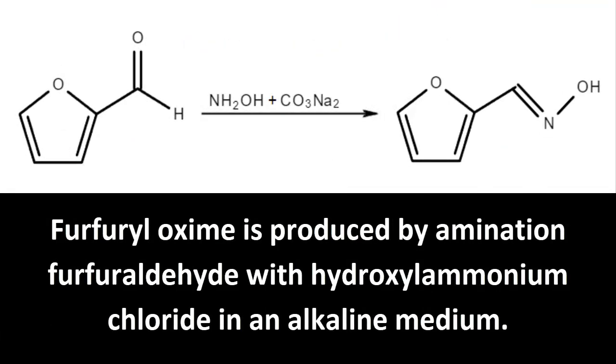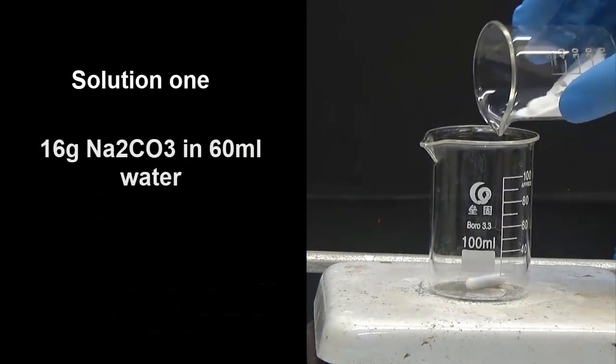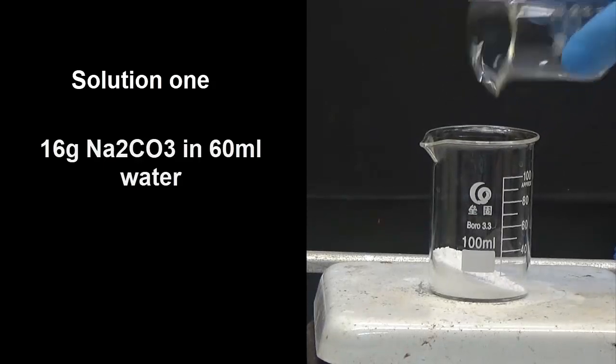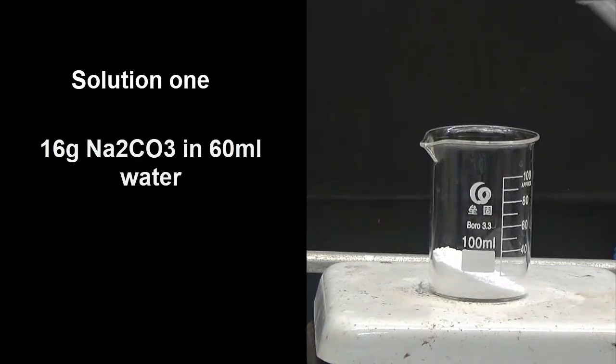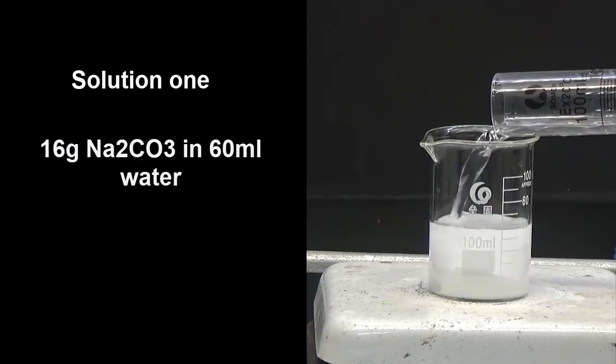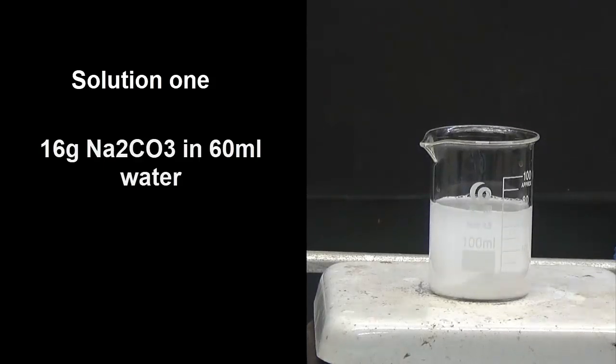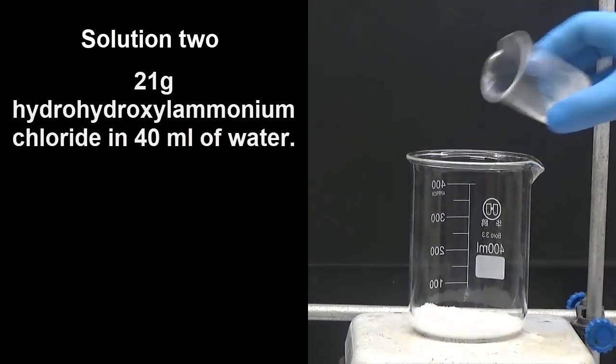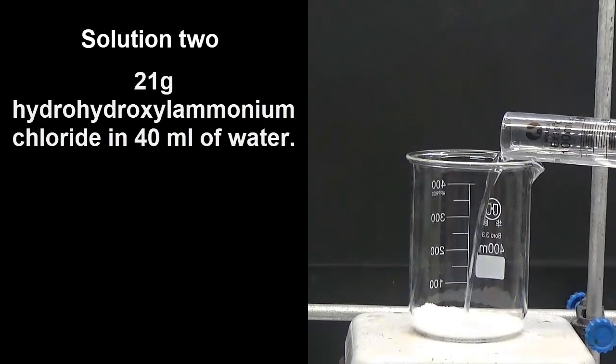To obtain furfuryloxime, prepare a 16 gram solution of sodium carbonate in 60 milliliters of water in a 400 milliliter beaker. We will dilute 21 grams of hydroxylamonium chloride in 40 milliliters of water with stirring.